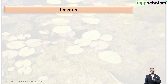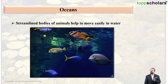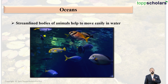If you notice, the organisms living in the oceans all have streamlined bodies. These streamlined bodies help the animals to move very easily in the water. Streamlined can be simply described as tapering towards both ends, which reduces the friction felt in water, making it very easy to swim.